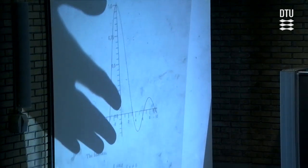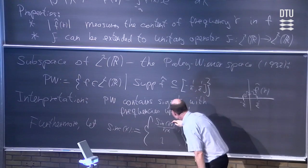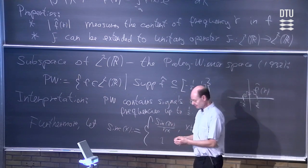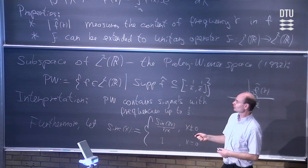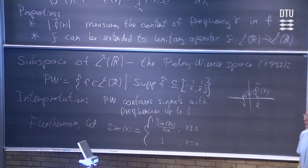Now you recognize the function. We are looking at a slightly different scaling — here we have sin(πx) divided by πx, whereas before it was just sin(x) divided by x. So there is an additional pi inside the sin function and also in the denominator. Except for that, this is a function we have seen before. Now you will see how this function actually relates to the space PW.